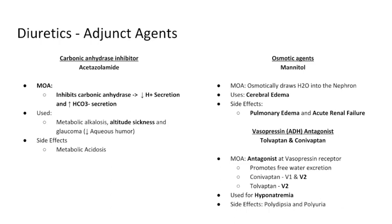These are primarily used for euvolemic and hypervolemic hyponatremia. For example, in SIADH or psychogenic polydipsia, the patient is in a fluid overload state and the sodium on their chem panel is in the 130s or 120s. Kidney function is fine, but for whatever reason they are fluid overloaded, manifesting as hyponatremia. We can give a vasopressin receptor antagonist to excrete free water without excreting sodium to treat hyponatremia. Side effects are polydipsia and polyuria, since we're secreting more free water.